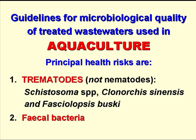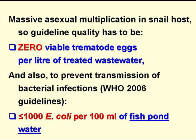The 2006 WHO guidelines for wastewater use in aquaculture are concerned with the eggs of trematode worms, in particular schistosome eggs, and those of Clonorchis sinensis, the oriental liver fluke, and Fasciolopsis buski, the giant intestinal fluke, and also with faecal bacteria. Now there's massive asexual multiplication of the trematodes in their first or only aquatic host, which is a freshwater snail. So the guideline quality has to be zero viable eggs per litre of treated wastewater. And to prevent the transmission of bacterial infections, there should be no more than 1,000 E. coli per 100 ml of the water in the fish pond.